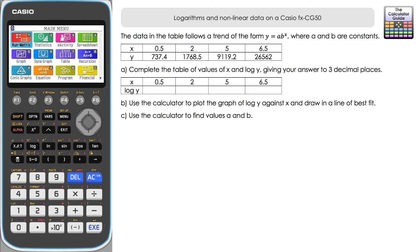Firstly we have to complete the table of values of X and log Y, giving an answer to three decimal places. We've got a table to fill in — the values of X remain the same and we have to find the log values of Y, and we're going to get the CG 50 to do that for us.